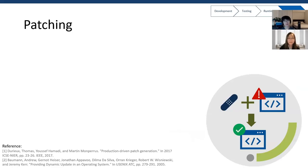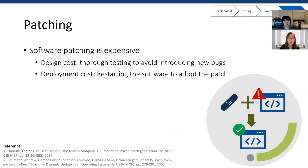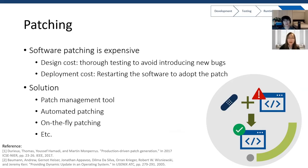Now we go to the last phase: maintenance. If a bug is exposed, developers need to fix it with a patch. Software patching is expensive — they have to test the patch thoroughly to avoid introducing new bugs. In addition, deploying a patch typically requires restarting the software. To solve these problems, researchers propose patch management tools to help developers understand the impact of a patch, automated patching to reduce effort in testing and deploying, and on-the-fly patching to apply a patch without stopping software services.